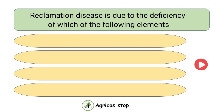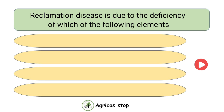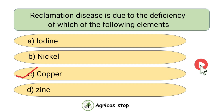Reclamation disease is due to the deficiency of which of the following elements? Options are Iodine, Nickel, Copper, and Zinc. The answer is Copper. Reclamation disease is due to the deficiency of Copper.